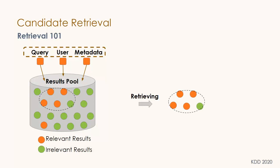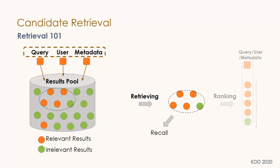It is impossible to do a one-by-one comparison between input data and every candidate in the result pool, so we retrieve the most relevant set to reduce what we send to the ranker — this mainly improves recall. We then send the retrieval set to the ranker together with the input query, user profile, and metadata to rank documents by relevance, focusing on improving precision.